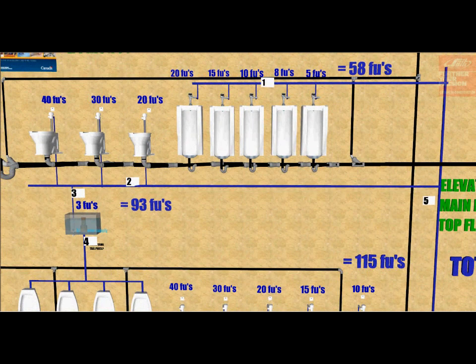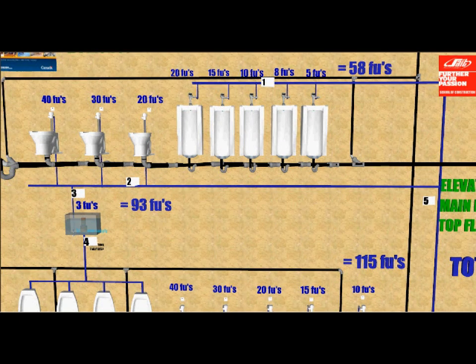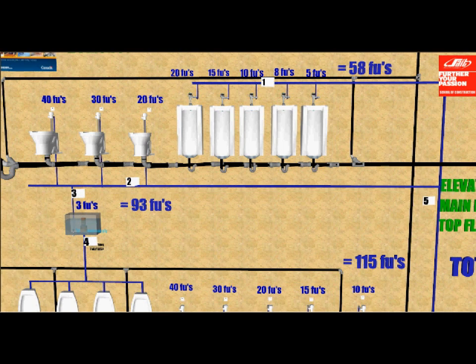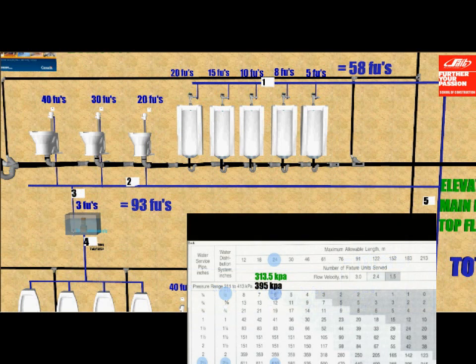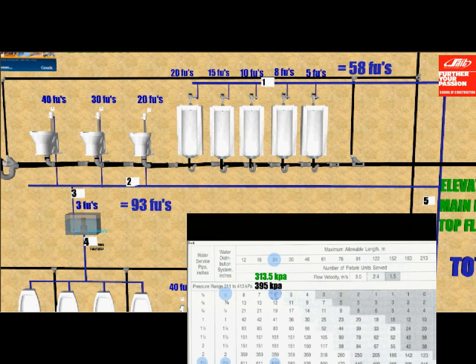In order to figure out number five, work your way back on the top floor. Add the 58 and the 93 fixed units for a total load of 148. Turn to table A2631. Go to a higher number than 148, which will be 151, and you will find number five to be inch and a half.